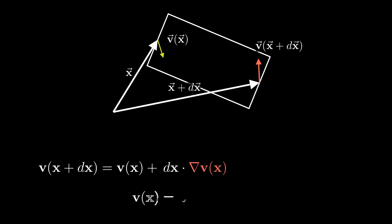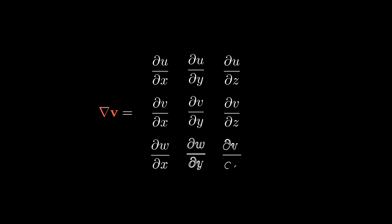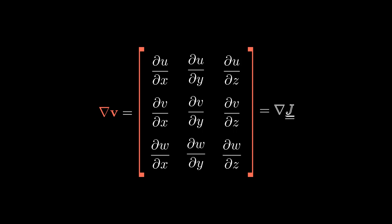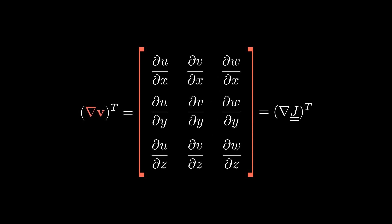Remember the velocity is three-dimensional with u, v, and w for the directions. The gradient of v has a partial derivative in each direction of v in every direction — you might also recognize this as the Jacobian. If we take the transpose of this, that gives us the velocity gradient tensor.